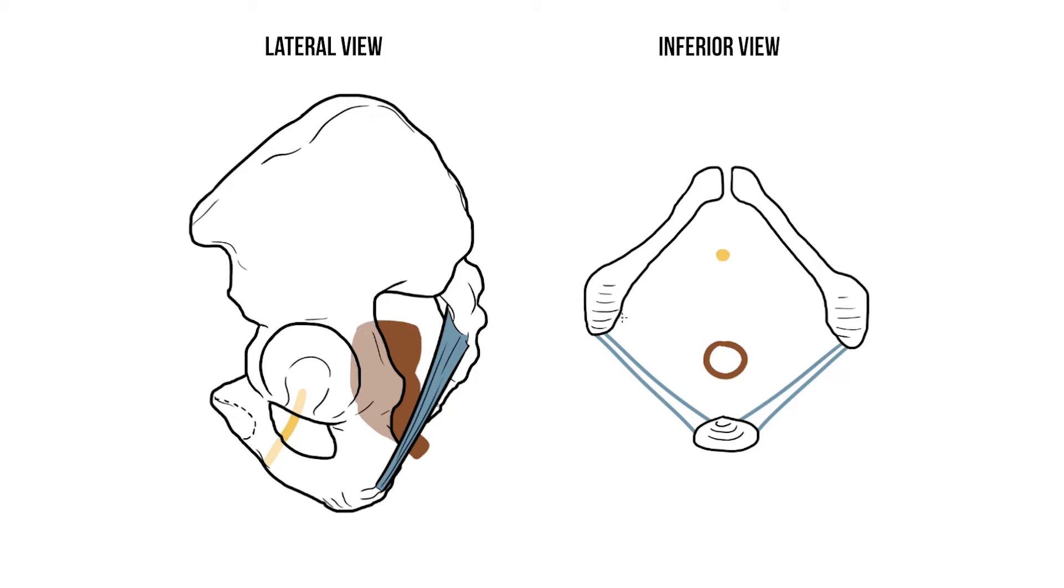We can divide the perineum by adding an imaginary line between the two tuberosities. Posterior to this line is a three-sided space that contains the terminal portion of the rectum, a.k.a. the anus, so we call this region the anal triangle.